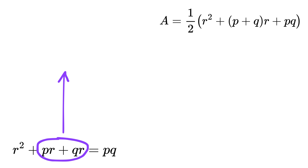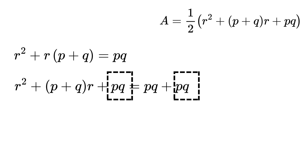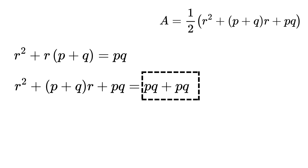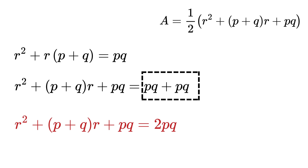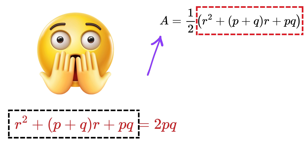Dividing by 2 and factoring gives r(r + p + q) = pq. Adding pq to both sides yields r² + (p + q)r + pq = 2pq. This expression is exactly the same as the expanded area formula, so the area equals ½ × 2pq, which gives area = pq.